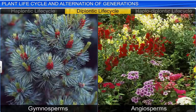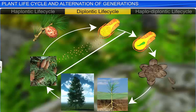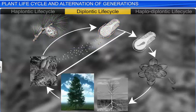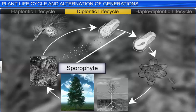In the diplontic life cycle, observed in gymnosperms and angiosperms, the gametophytic generation is represented by a single or a few-celled gametophyte. On the other hand, the dominant sporophytic generation is represented by a diploid, free-living, and photosynthetic sporophyte.